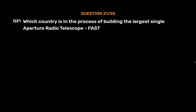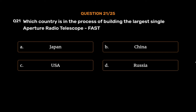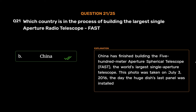Question No. 21. Which country is in the process of building the largest single aperture radio telescope, FAST? Option A: Japan. Option B: China. Option C: USA. Option D: Russia. The correct answer is Option B: China. China has finished building the 500-meter aperture spherical telescope, FAST, the world's largest single aperture telescope. The last panel of the huge dish was installed on July 3, 2016.